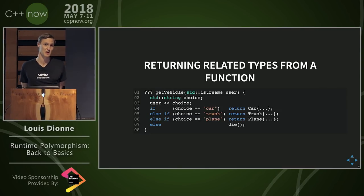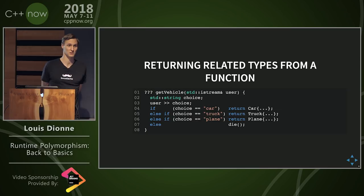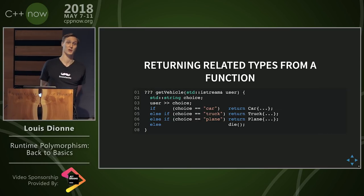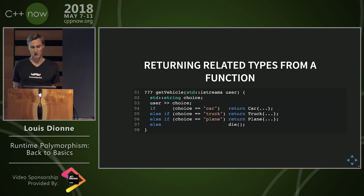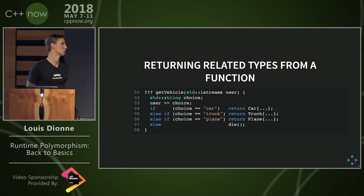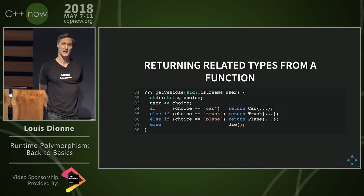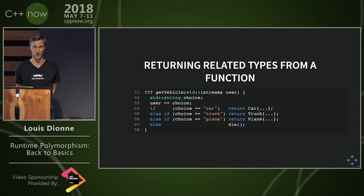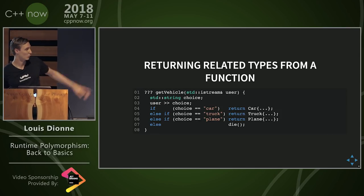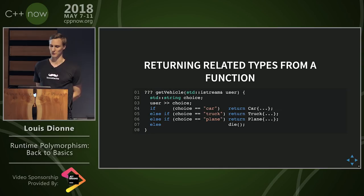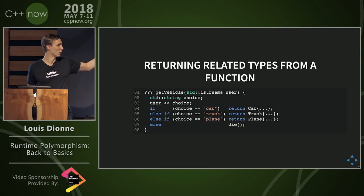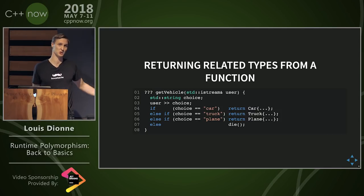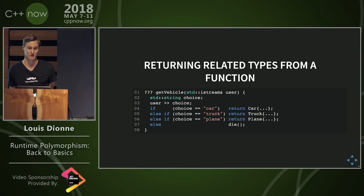Because those have different types, you'll need to settle on one single representation. Usually what we do is have a base class and return a pointer to that base class, which is actually pointing to one of any of these derived classes. So in a case where you want to return one of many different types based on a runtime condition, that's a place where you might need runtime polymorphism.